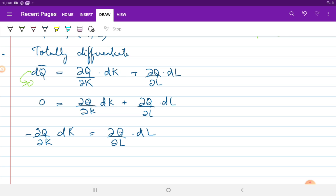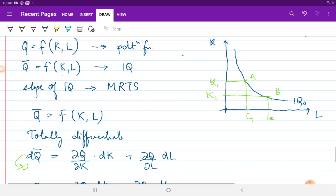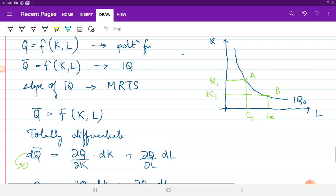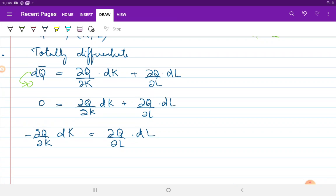Remember, our graph was with L on the x-axis and K on the y-axis. So, the slope for this particular graph would be dK/dL. So, I can write dK/dL as minus of the ratio of ∂Q/∂L divided by ∂Q/∂K.